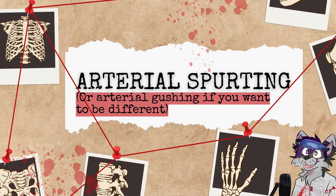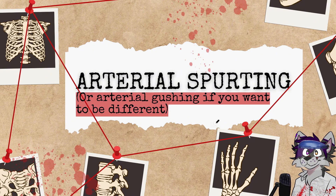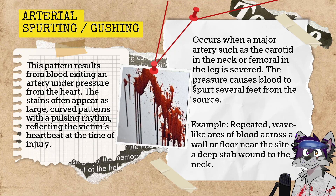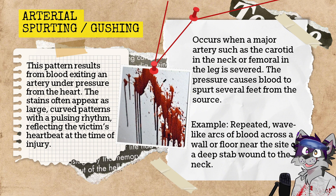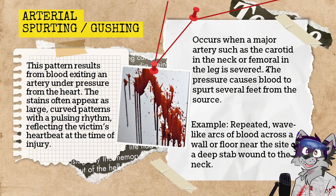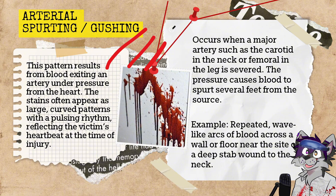The next type is arterial spreading, also known as arterial gushing. This pattern is found when blood is exiting an artery — the stains appear large and curved with a pulsing rhythm that reflects the heart rate of the person at the time. Because it is linked to a major artery there is a lot of pressure from the heartbeat. This occurs when a major artery such as the carotid artery in the neck or the femoral is severed, causing blood to spurt several feet from the source. An example would be repeated wave-like arcs of blood across a wall near a deep stab to the neck.